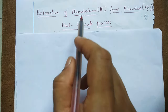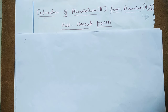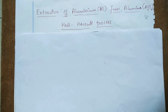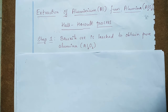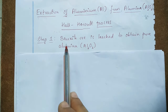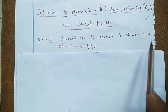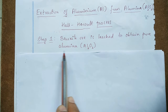The principal ore of aluminium is found to be bauxite. When you obtain bauxite from the earth's crust, it will be associated with a number of impurities like ferric oxide, titanium oxide, etc. So first of all, we need to remove all these impurities from the bauxite ore. This can be done by a process called leaching. Therefore, the first step is that bauxite ore is leached to obtain pure aluminium oxide or alumina.